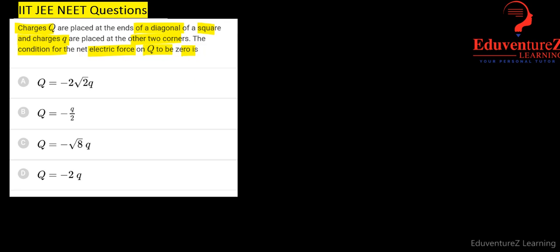Let us first draw a square. In this square, two charges are placed capital Q and capital Q like this and a small q here and a small q here.